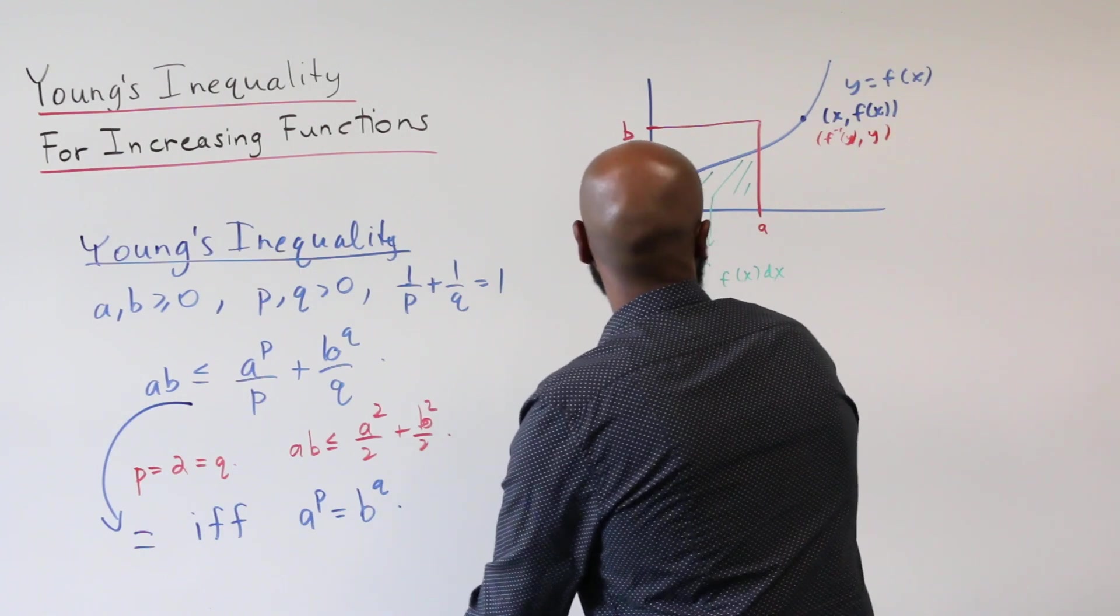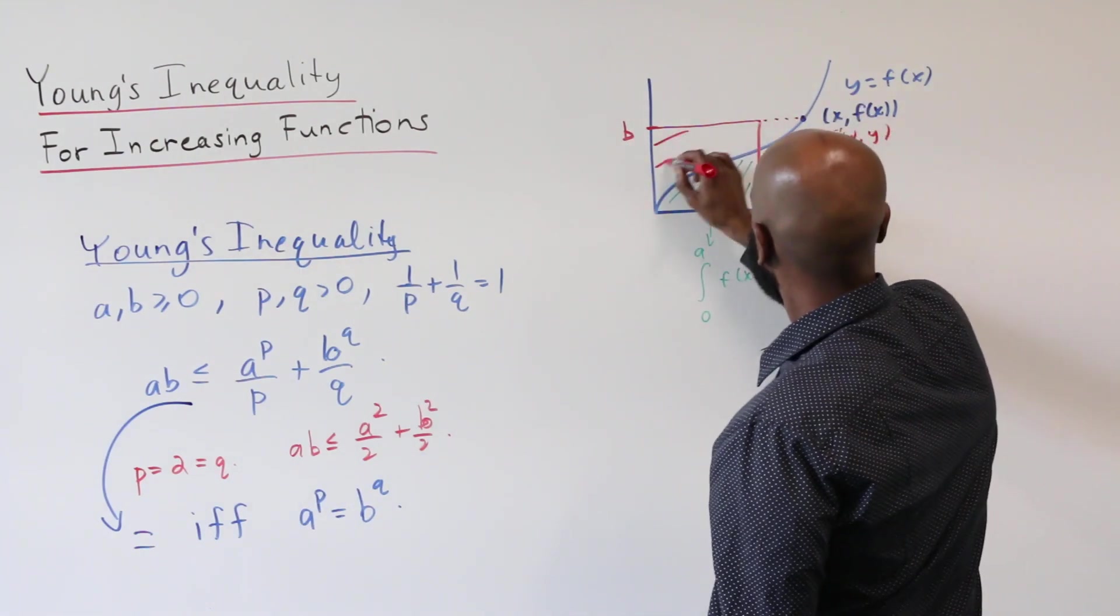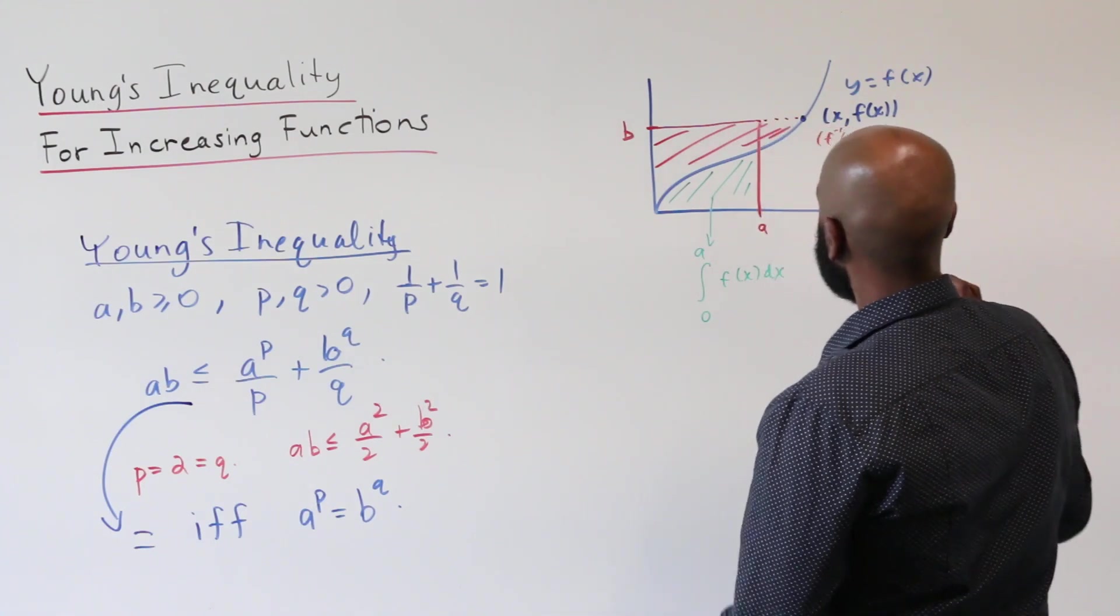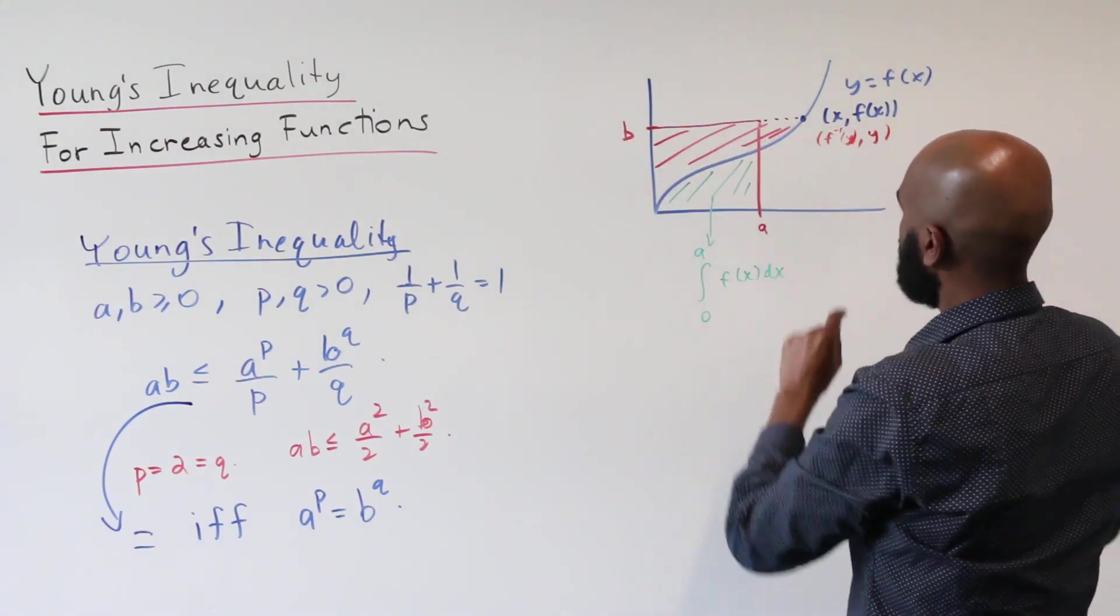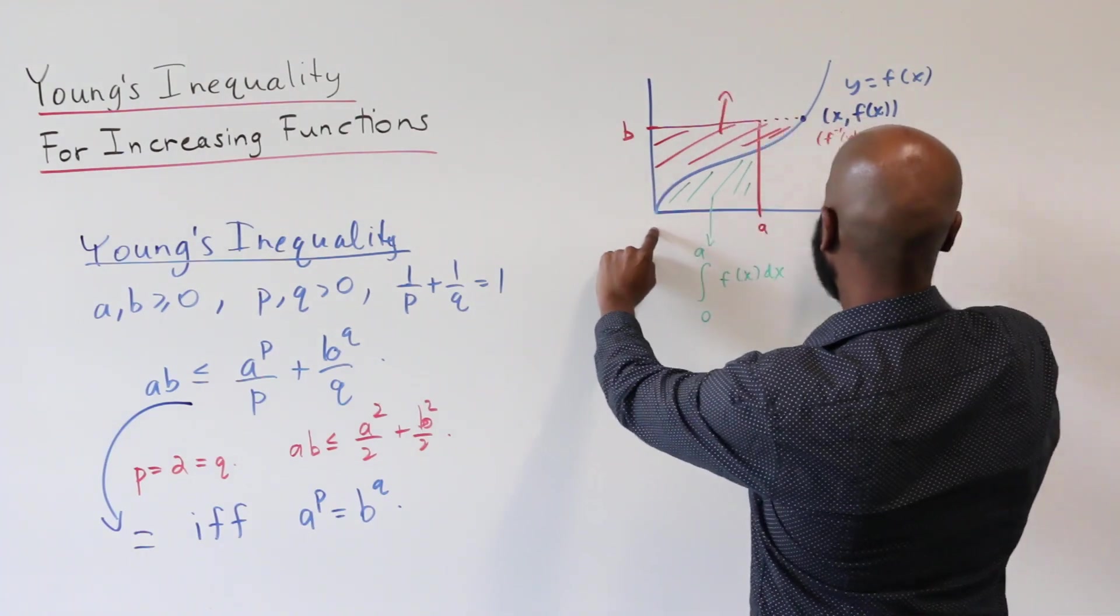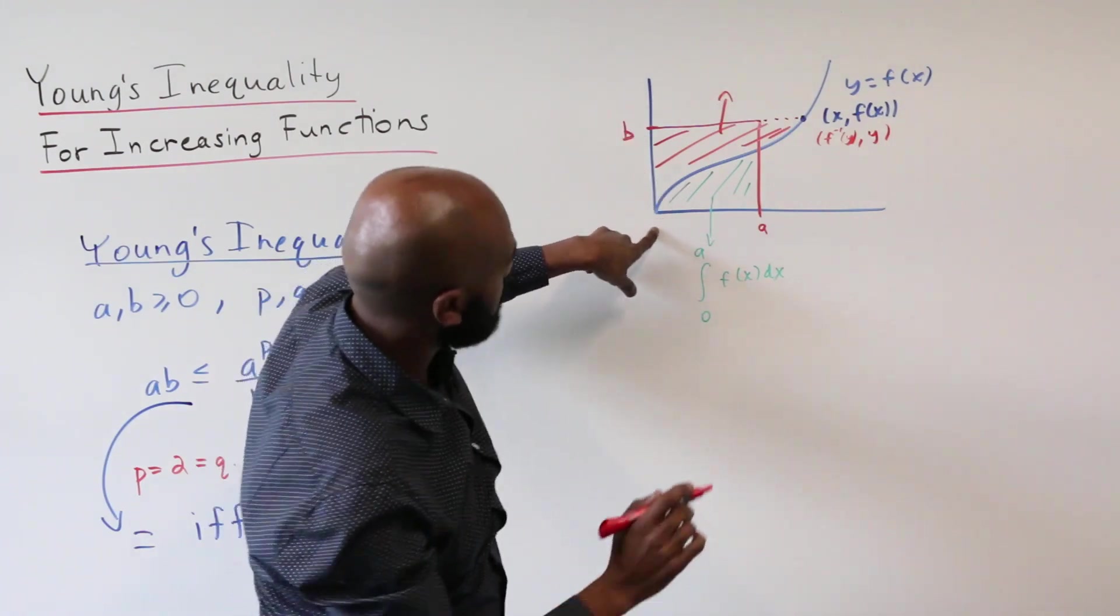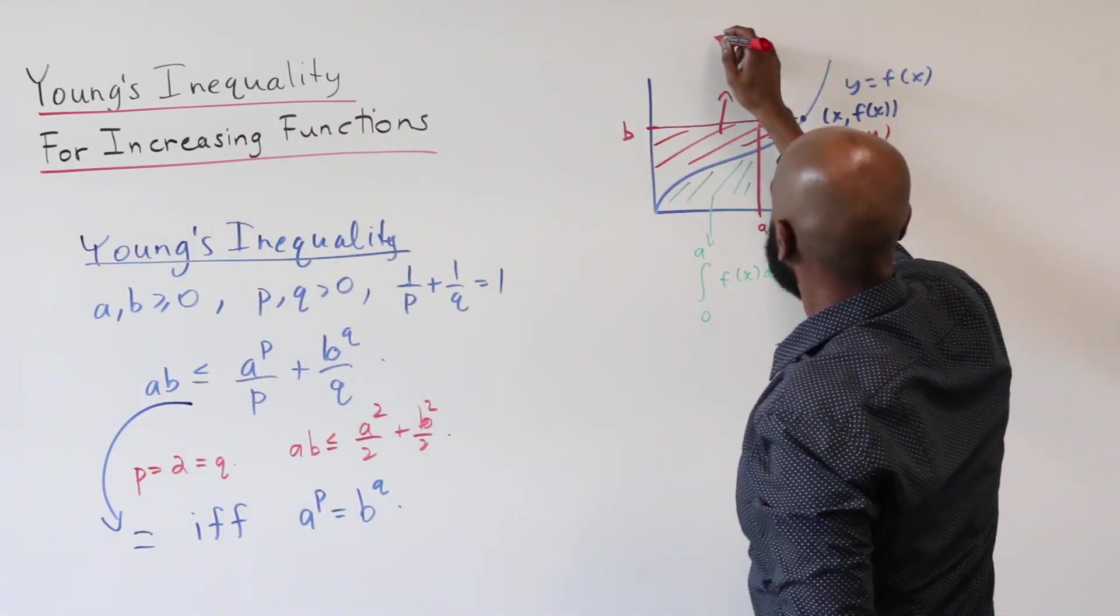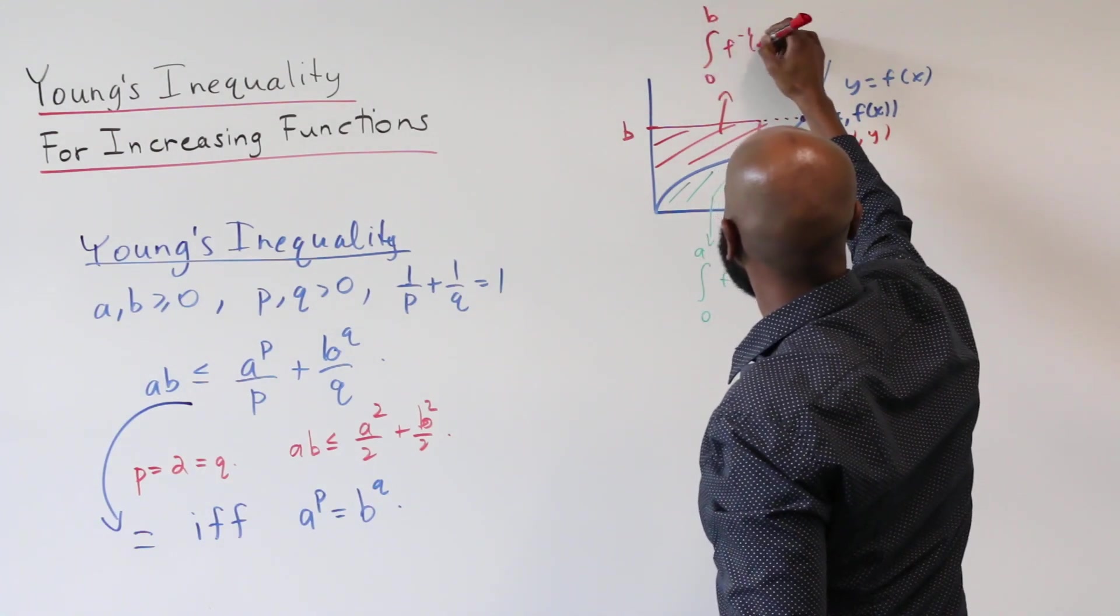And then secondly, we have this red region here, which extends a little bit outside of the rectangle formed by A and B. And because this is the graph of y equals f inverse of x, looking at it this way, this red region has area integral from 0 to B, f inverse of x dx.